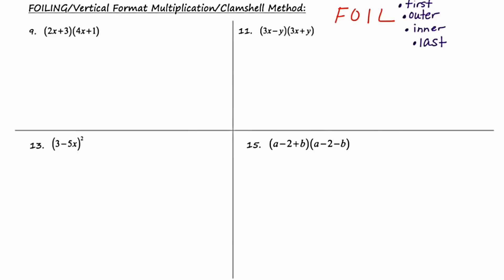Moving to example 9, we're going to FOIL. We start by multiplying the first things together: 2x times 4x, which is 8x squared. Then the outer: 2x times 1, which is 2x. Then the inner: 3 times 4x, which gives a product of 12x. And then last: 3 times 1, a product of 3.